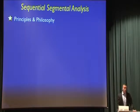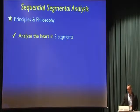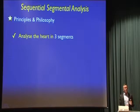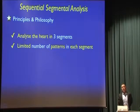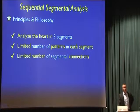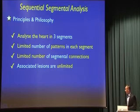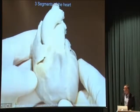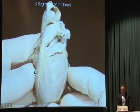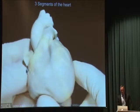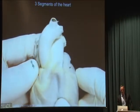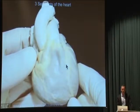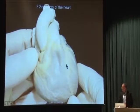The principle, initially set out by Richard Van Praag and then adopted by others, is that we analyze the heart in three parts — three segments — and then look at the patterns within each segment. Those patterns will be limited, and that gives us a limited way in which those segments can connect. It's also crucially important to look at all the other associated problems, such as ASDs and obstructions. Here's an example of a pediatric human heart specimen showing the three segments: the atrial segment, the larger ventricular segment, and the great arteries.